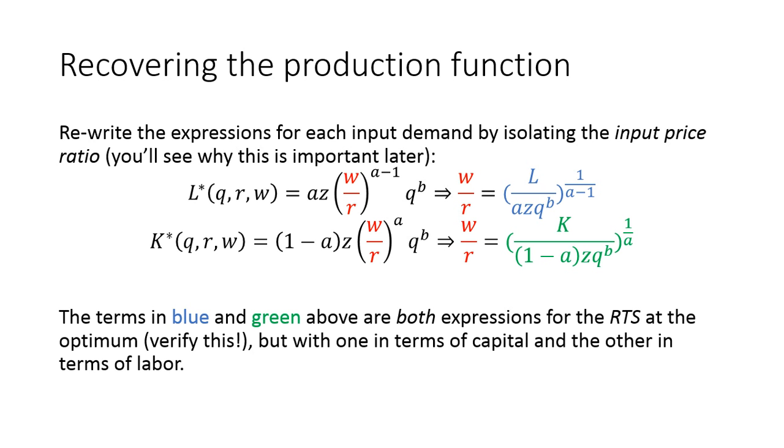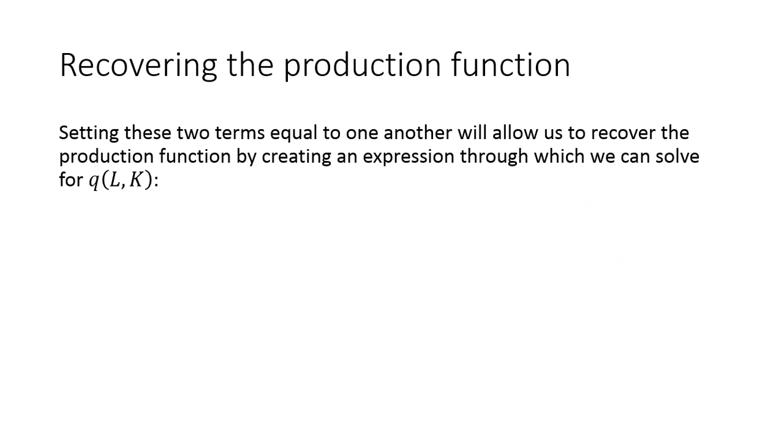What we'd like to do is recover the production function using this information here. So we're going to set the blue and the green terms equal to one another, and this will allow us to find an expression for Q in terms of L and K. Again, these are both expressions for the RTS. They have to be equal in equilibrium because the RTS is equal to the price ratio of the inputs. We're going to use this equation here to solve for Q in terms of L and K, and I'm going to go through the algebra step by step.